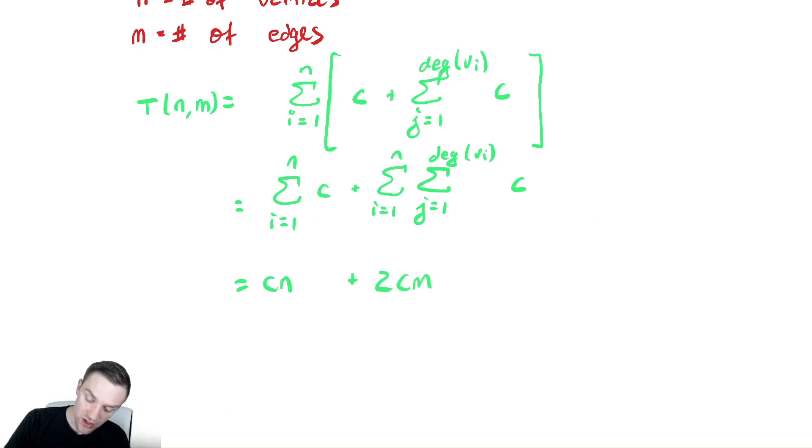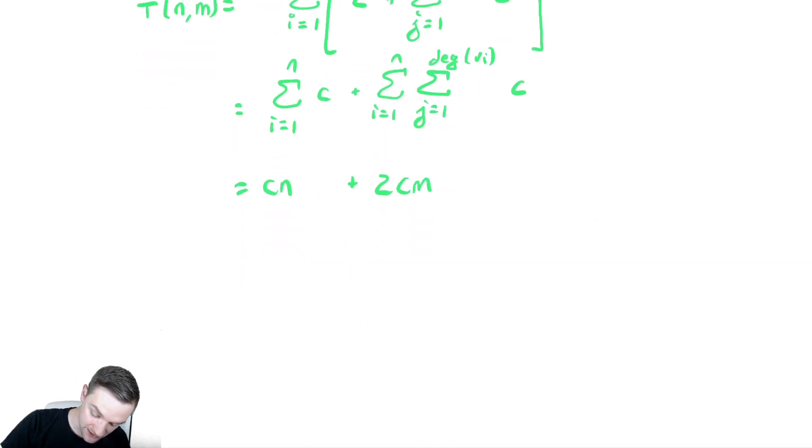Now, notice I have the two different notions of size here, and therefore the runtime is in theta of n plus m. We cannot further simplify that because we do not know how those two things relate. Similar to when we saw hash tables when we had a notion of the number of elements and the size of the hash table, we get a similar thing occurring here, and you can expect that for graph algorithms.